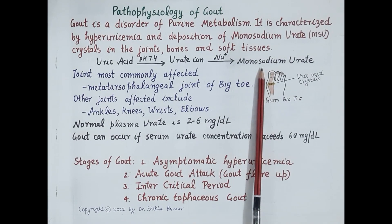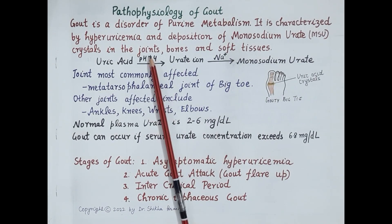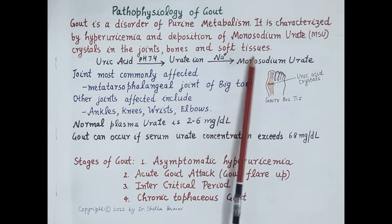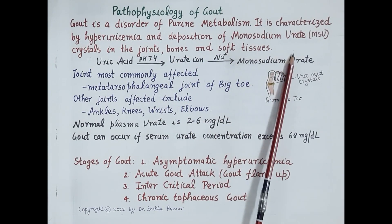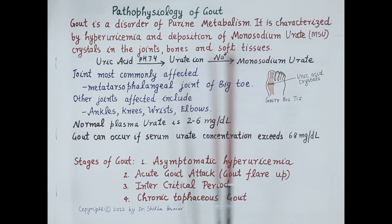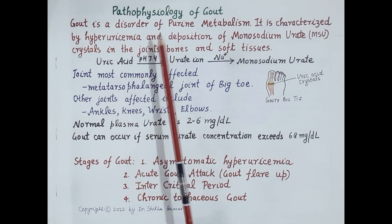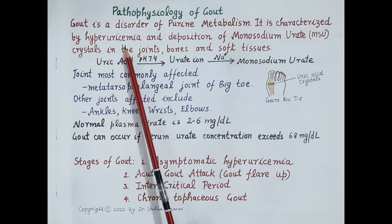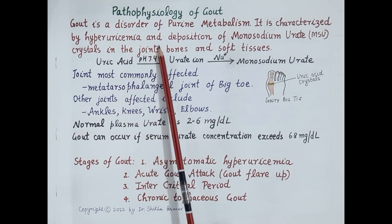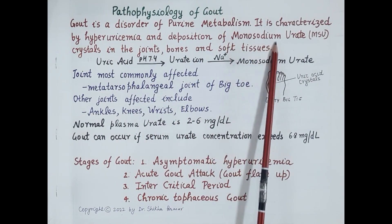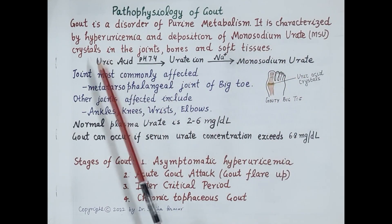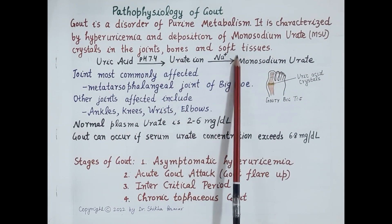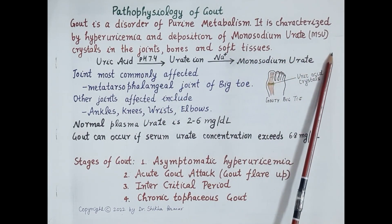These crystals deposit in the joints, bones, soft tissues, and also in the kidneys. So gout is a disorder of purine metabolism characterized by hyperuricemia and deposition of monosodium urate crystals in the joints, bones, soft tissues, and also in the kidneys.